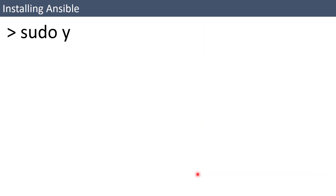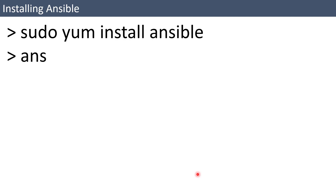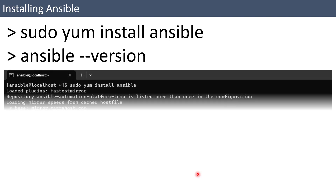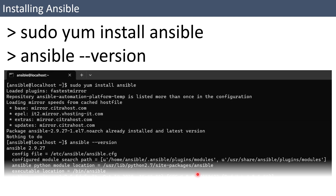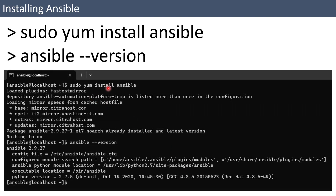To install Ansible, the process is quite simple — you can just use the package manager. In this case I'm using yum: sudo yum install ansible. After that, you can run 'ansible --version' to see the version information of Ansible installed on the system. I have already installed Ansible, so running the command says everything is already installed. Running ansible --version shows we are running Ansible 2.9.27.